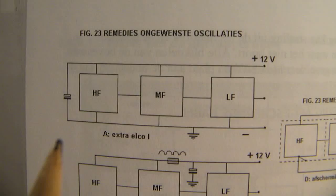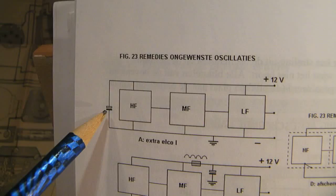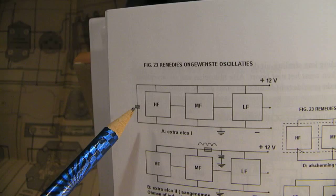Remedies against oscillations. This is the first remedy. The first remedy is to connect an extra electrolyte capacitor over the voltage line. That will help as a first remedy.